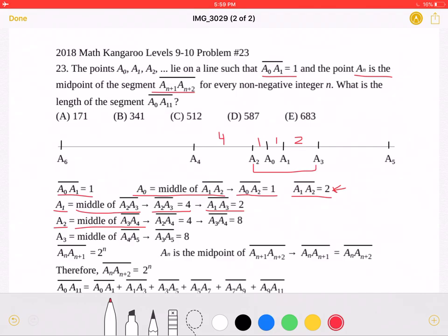And we know that a2a3 is equal to 4. And that also tells us that segment a3a4 must be equal to 8. a3 is the middle of a4a5, and that means that a3a5 must be equal to 8 because again a3 is the midpoint and a3a4 is equal to 8.